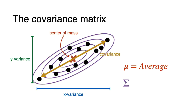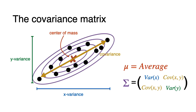We have something called the covariance matrix, which encompasses a lot of this information. It's simply the matrix formed by the variance in the x-direction and the variance in the y-direction that goes in the diagonal, and the covariance which goes in the places outside of the diagonal. This dataset is two-dimensional, so the covariance matrix is two by two. But if we had a 100-dimensional dataset, then we would have a 100 by 100 covariance matrix.